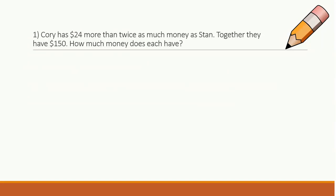Here's my very first problem. Corey has $24 more than twice as much money as Stan. Together, they have $150. How much money does each have? So my first thing that I need to figure out is what's x and what is y. What are they talking about? How much money does each have? So we're talking about money with Corey and Stan. So let's make x Corey's money. And y is Stan's money.